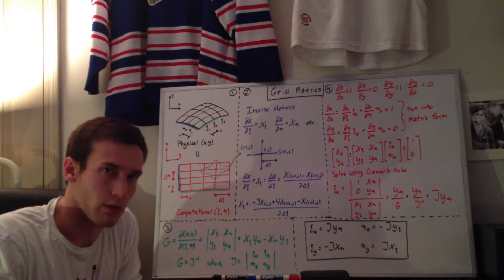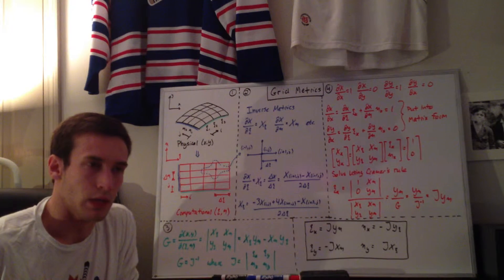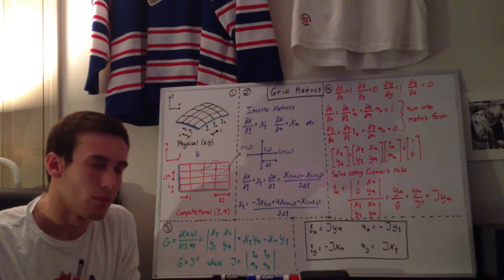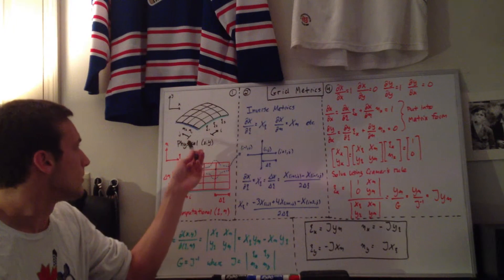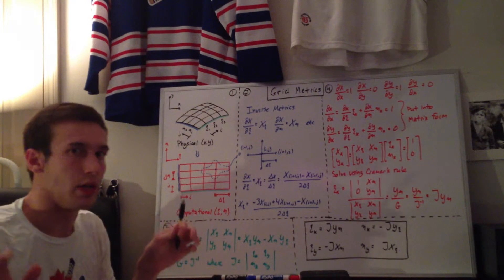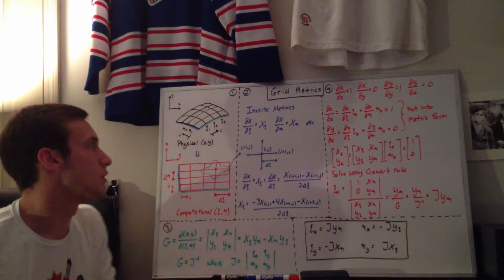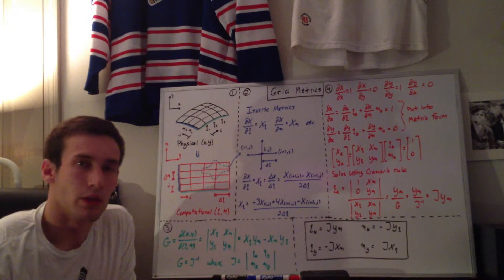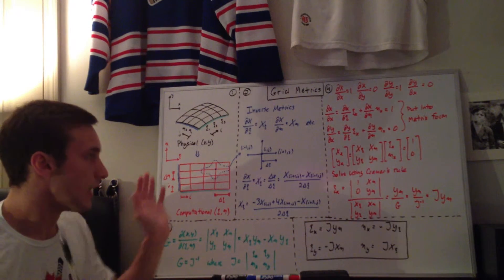We're transforming grids. You've probably done coordinate transformations from spherical or cylindrical to Cartesian — those had analytic transformations, like x equals r cosine theta for cylindrical. But the problem here is that this is any arbitrary shape you define, and the points can be in any location in space. So when you're trying to find how to transform them into the computational domain, we can't do it analytically; we need to do it numerically using finite difference approximations to get these inverse metrics first.